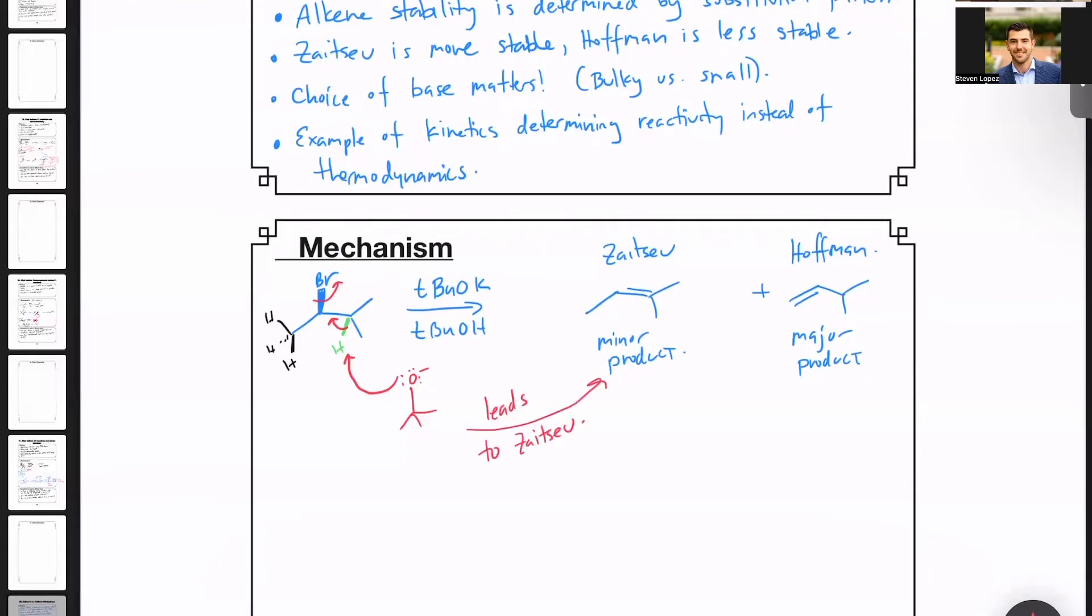Try writing the reaction mechanism going to the Hoffman product, in this case, the major product. You can pause the video and return once you've written out a mechanism.